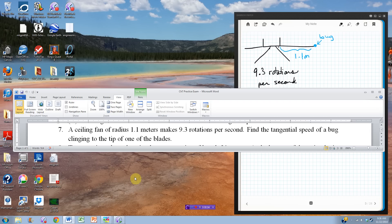This is the chapter 7 practice exam number 7. We have a ceiling fan of radius 1.1 meters, makes 9.3 rotations per second, and I want to find the tangential speed of the bug that's clinging to the tip of one of the blades.